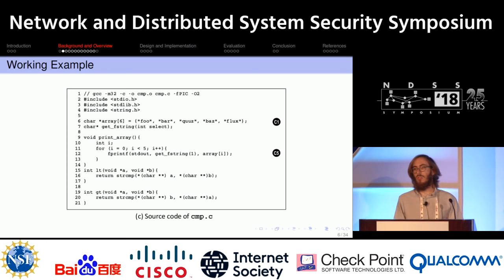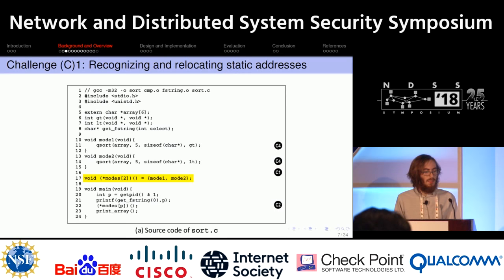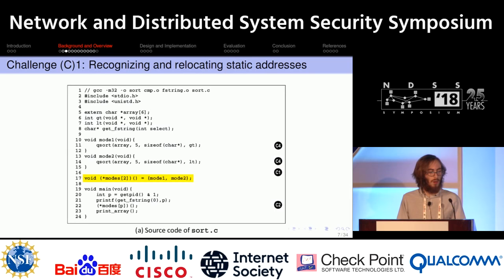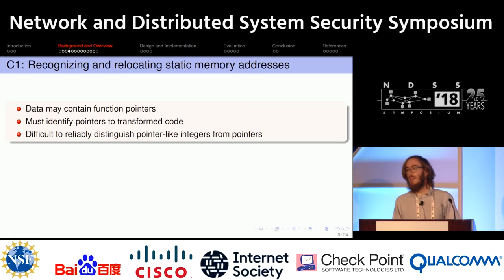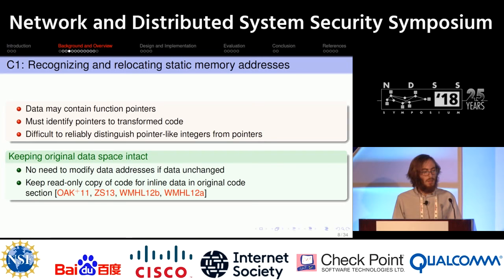The first challenge when rewriting a binary is recognizing addresses statically. The modes array is an array of function pointers, and when you look at the data section of the binary, you have the two addresses seen in the function pointer array. The problem is: how do you distinguish a pointer-like integer from a pointer? An interesting way to get around it is to keep the original text and data sections intact, so any references to these will still be valid.